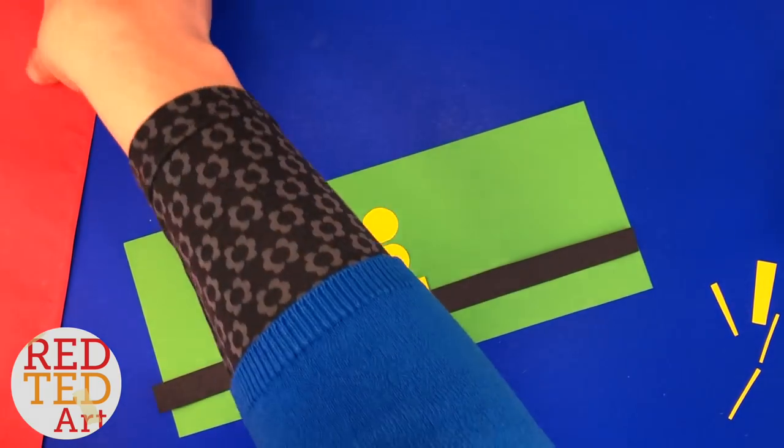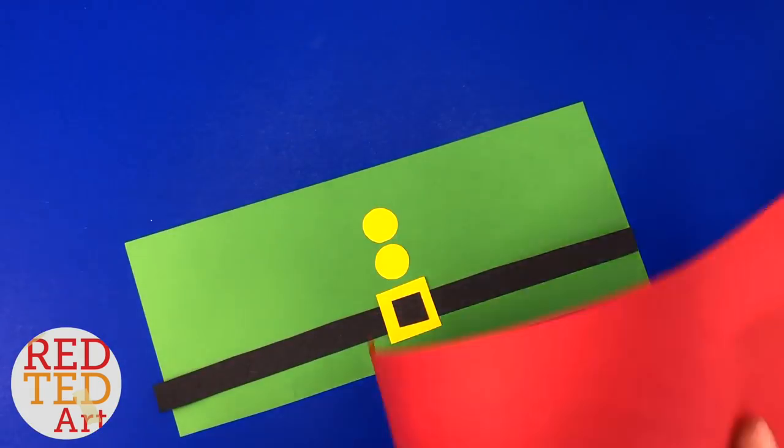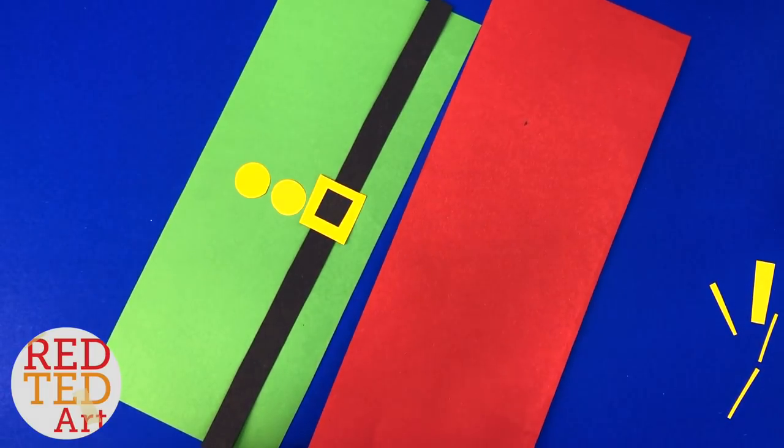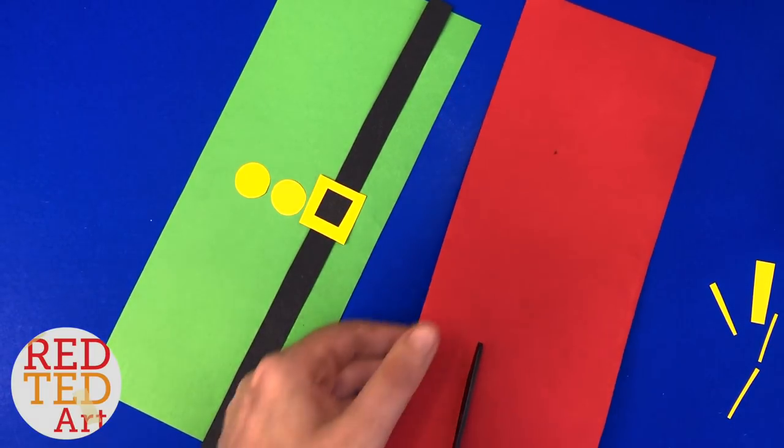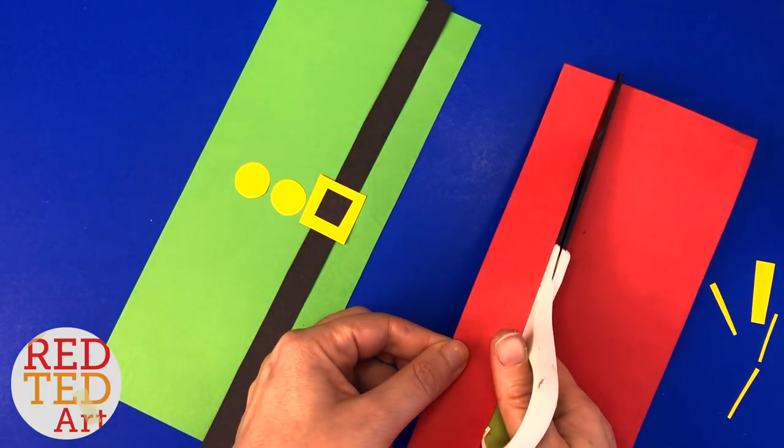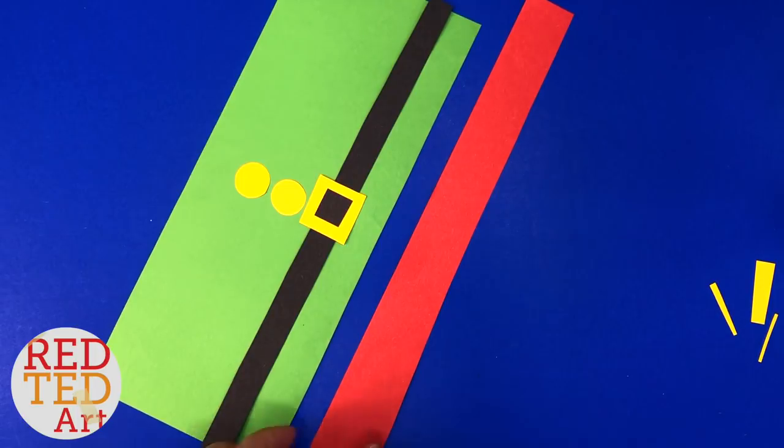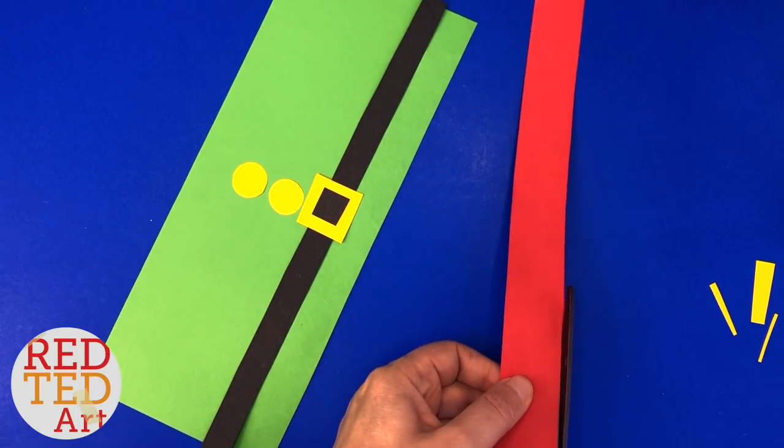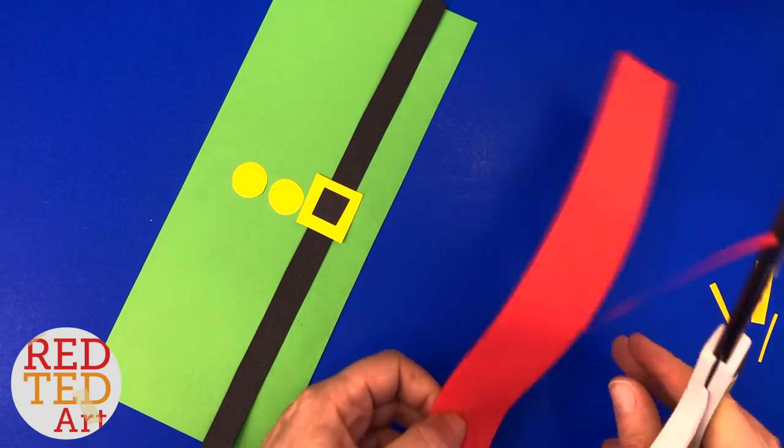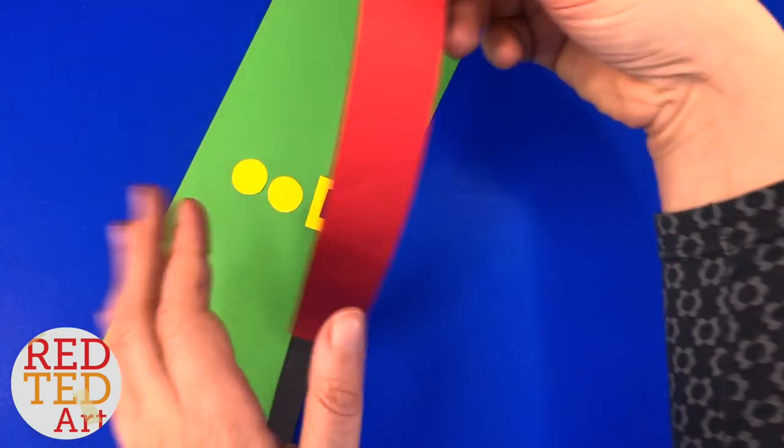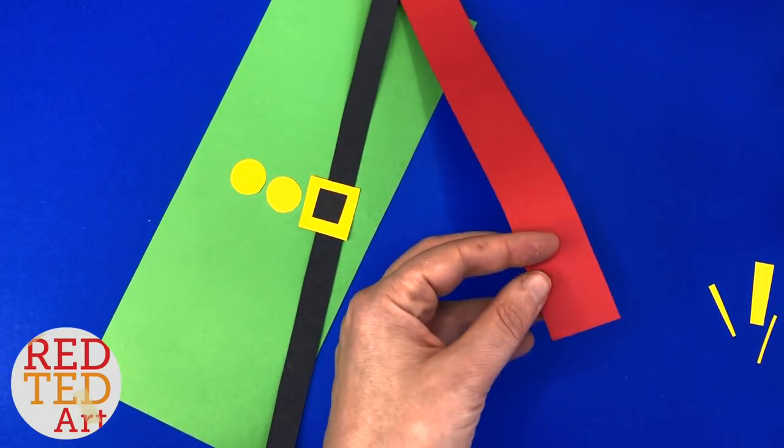And we're going to need a little collar. So to do the collar, we'll get this bit of red. Remember this bit of red? This was left over from when we made Santa. I'm going to cut a strip quite wide. And then we're going to zigzag.